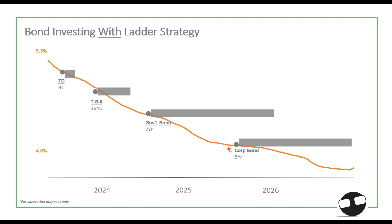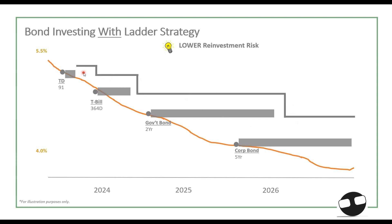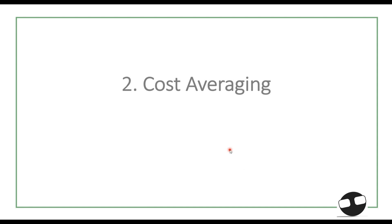There are two kinds of plays here. Number one is the yield play — you can lock in or secure that yield while market rates keep dropping. Number two, you can actually trade these instruments at a premium, meaning selling them, because they hold a higher yield than the prevailing market rate. This ladder effect also results in lower reinvestment risk compared to investing in bonds or fixed income without a ladder strategy.